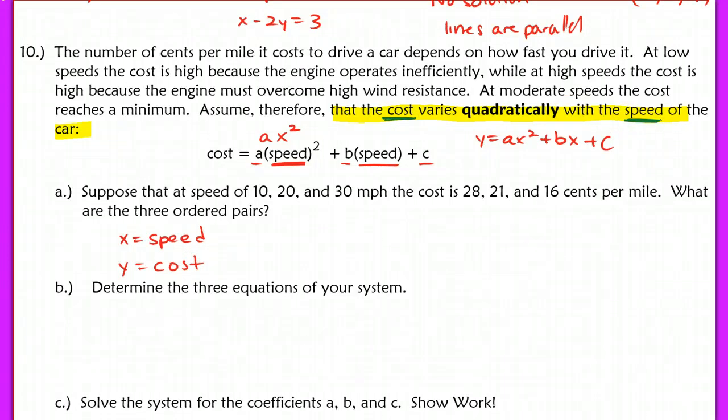You can kind of also tell that based off of our beginning sentence here when it says cost varies with speed. Remember how y varies with x when it's linear. It's the same thing for quadratically. So we've got y is our cost, x is our speed. And our three ordered pairs then would be 10, 28, 20, 21, and 30, 16.